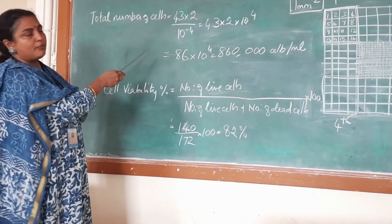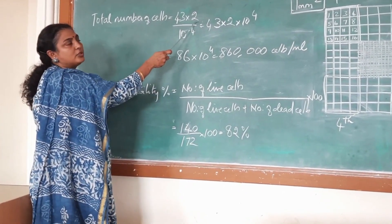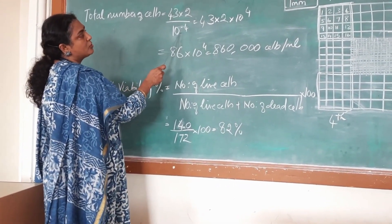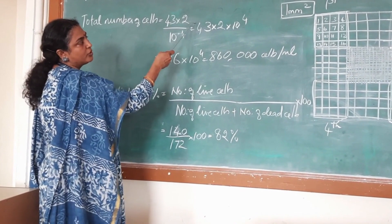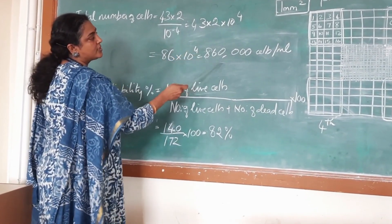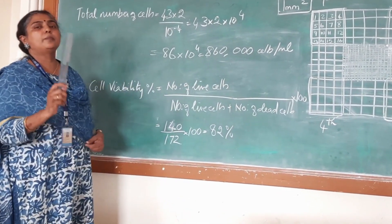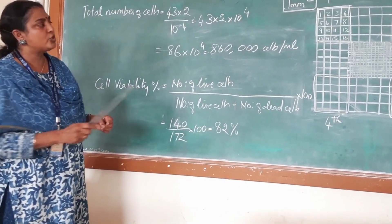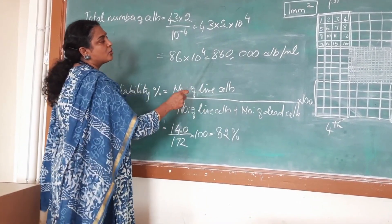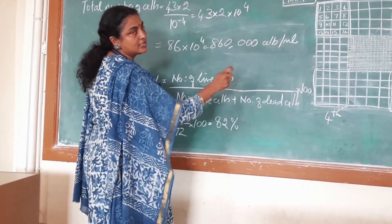For the total number of cells, we calculated: average of 43 multiplied by dilution factor of 2, divided by the volume 10 to the power of minus 4. Bringing the denominator to the numerator gives 43 × 2 × 10⁴, which equals 860,000 cells per millilitre. This should be expressed in standard western notation.